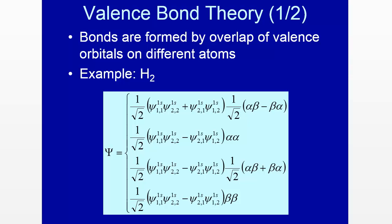One theory of bonding we already discussed was the Lewis dot structure, which proposed that two electrons shared between two atoms form a chemical bond, arranged so each atom has eight electrons around it. Valence bond theory is an extension of that idea using quantum mechanics. It was formulated in the 1930s primarily by Linus Pauling. The idea is that bonds are formed by the overlap of valence orbitals on different atoms, and the overlapped orbital has two electrons in it — that's what forms the chemical bond.